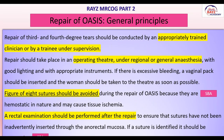Repair of third and fourth degree tears should be conducted by an appropriately trained clinician or a trainee under supervision. This should be done in an operating theatre under regional or general anesthesia with good lighting and appropriate instruments. If there is excessive bleeding, insert a vaginal pack and take the woman to theatre as soon as possible. Figure-of-eight sutures should be avoided as they are hemostatic in nature and can cause tissue ischemia. Rectal examination should always be performed before and after repair to ensure no sutures have been inserted through the mucosa.